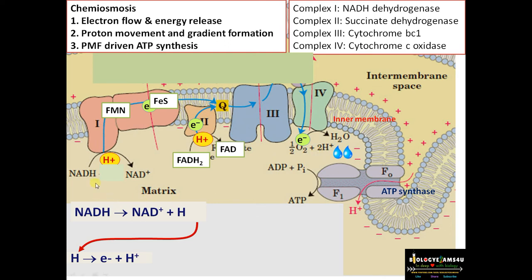High energy electrons from NADH are donated to Complex 1 and transfer through different electron carriers from Complex 1 to Complex 3 to Complex 4. Finally, these electrons are received by oxygen forming water — oxygen acts as the terminal electron acceptor. The same thing happens with FADH2: it becomes FAD, provides protons and electrons, which pass through Complex 2, then 3, then 4, and finally combine with hydrogen to form water.